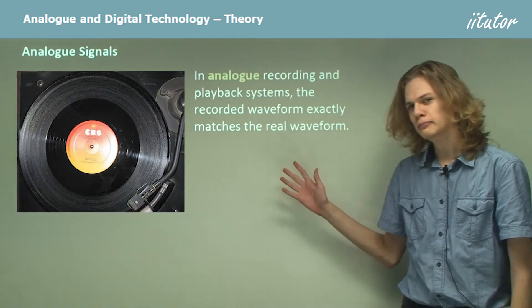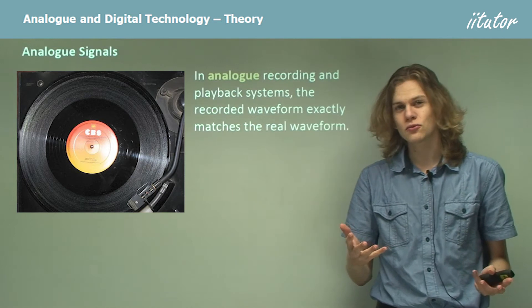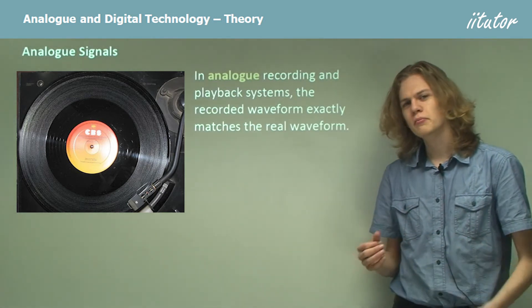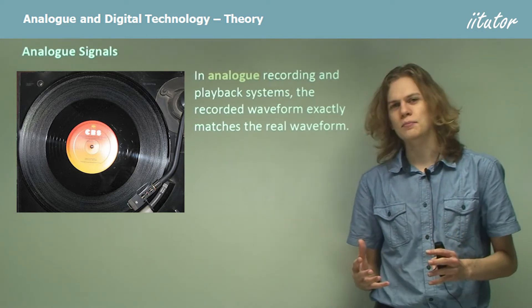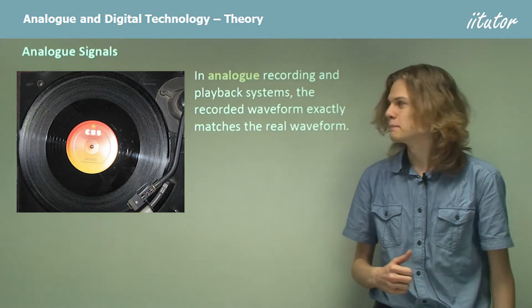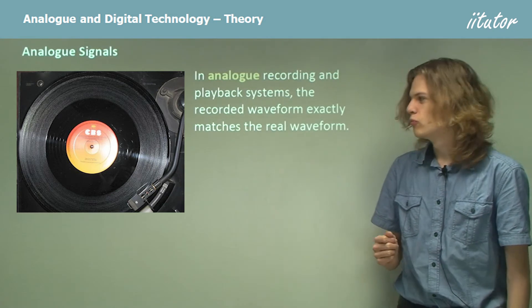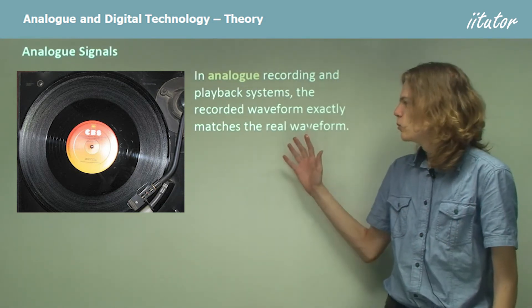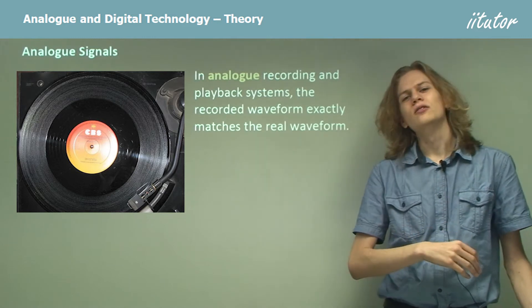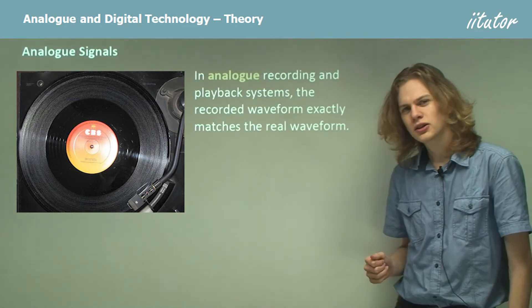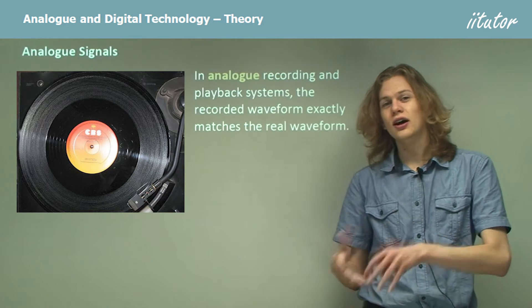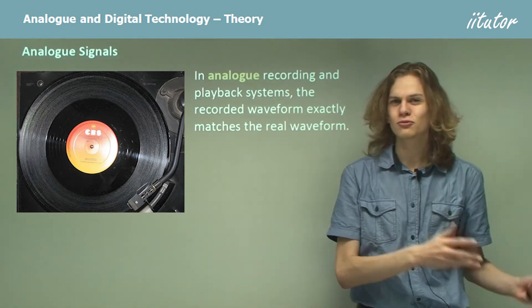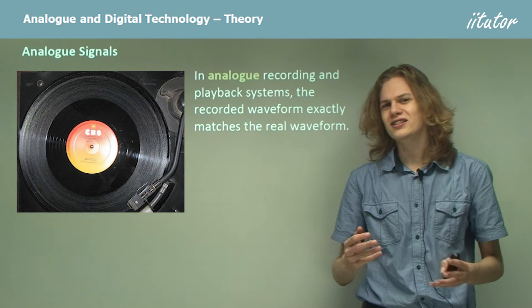In analog recording and analog playback systems, we have a continuously varying signal — that very smooth and continuous shape. The recorded waveform, whether it's on an LP disk or a tape cassette, will exactly match the waveform that it was recording. So if it wants to record a sine wave, the recording will look like a sine wave — there won't be any jagged edges or aliasing.